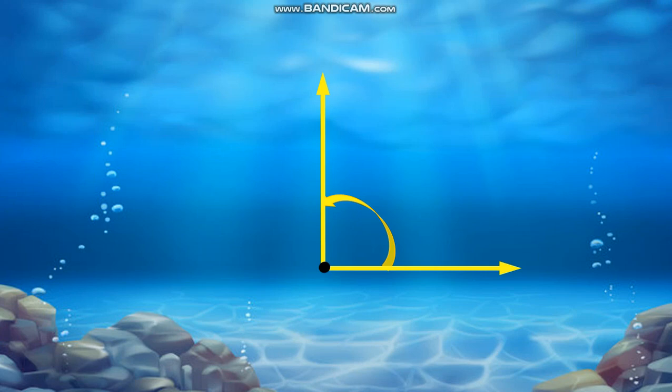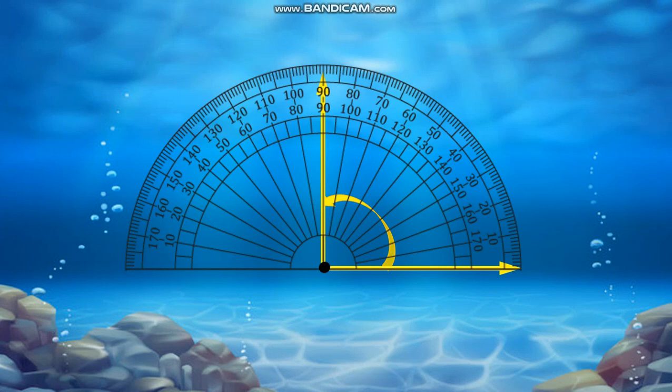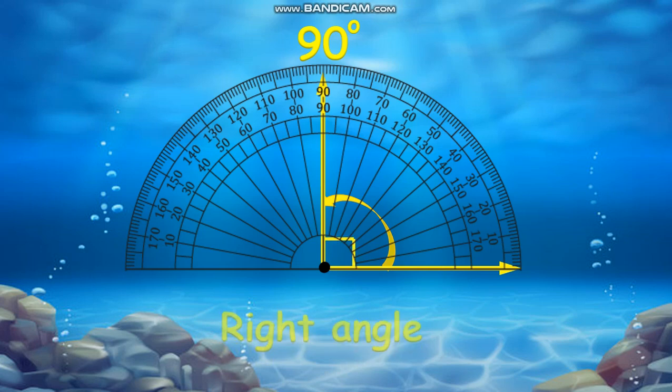Let's measure this angle with the use of a protractor. A ray of it is focused at 90 degrees, at the middle of the protractor, where we have also formed a square corner. This means we will call this angle a right angle — an angle that measures exactly 90 degrees.